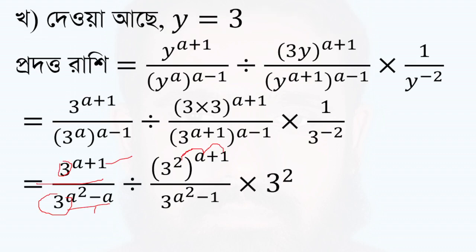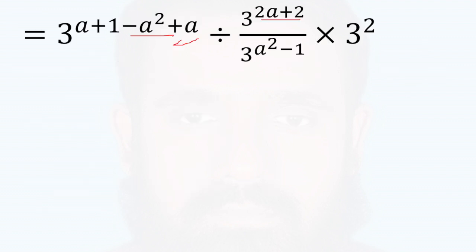And pi a squared minus 1, minus a squared plus a, and 2a plus 2. 2a plus 2. OK, and a plus 1 and a minus 1.